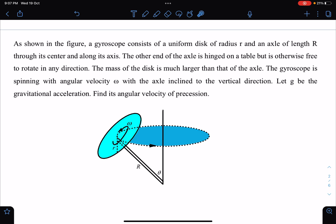The gyroscope is spinning with angular velocity omega with the axle inclined to the vertical direction. Let g be the acceleration due to gravity. Find the angular velocity of precession. This is called precession, and we have to calculate the angular velocity of this motion.